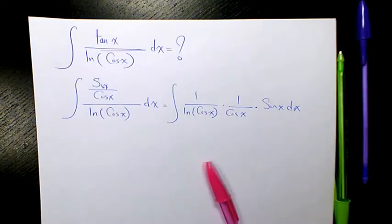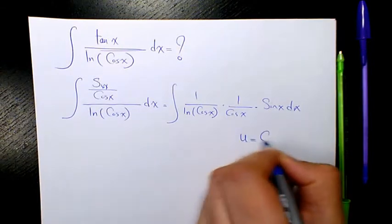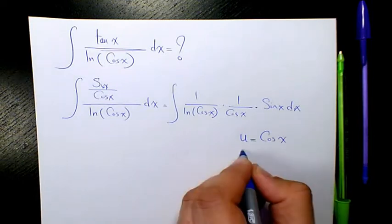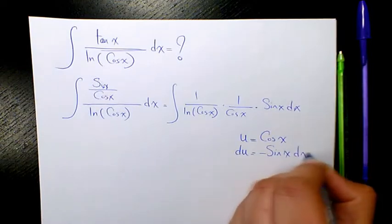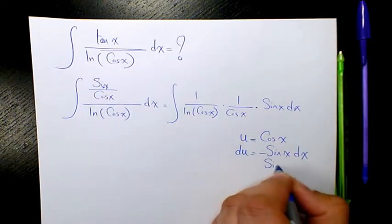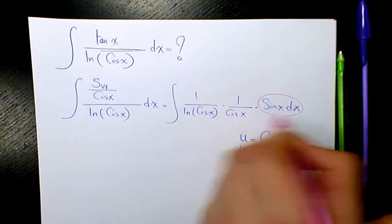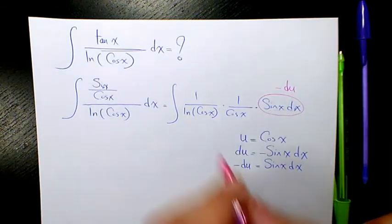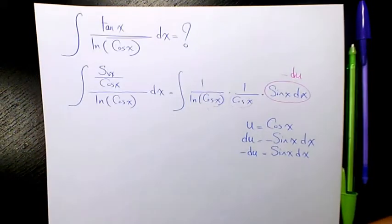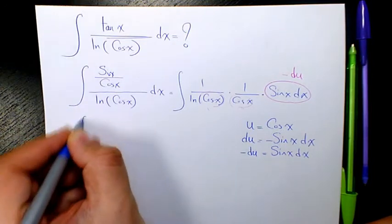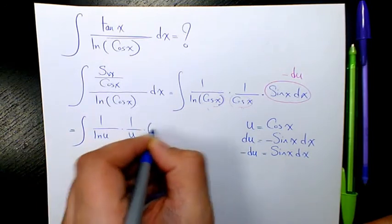Now I want to use the substitution method. I have u equals cos(x). When you find the derivative, du equals negative sin(x) dx, so sin(x) dx equals negative du. This part is gonna be negative du, here is u, and here is u as well, so it's gonna be 1 over ln(u) times 1 over u times negative du.